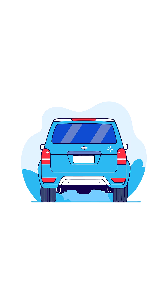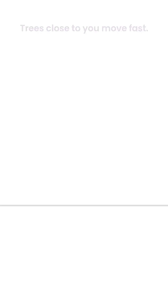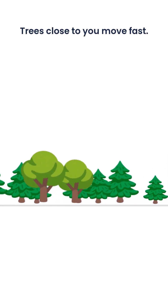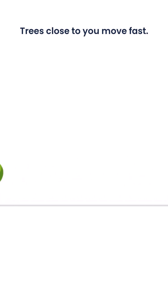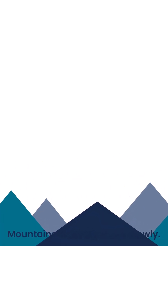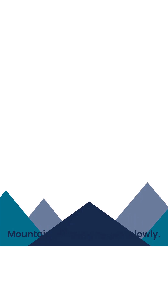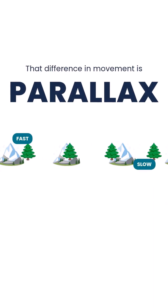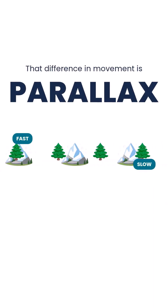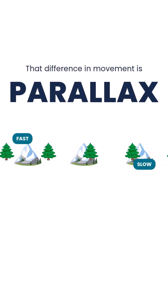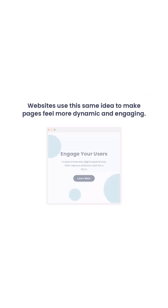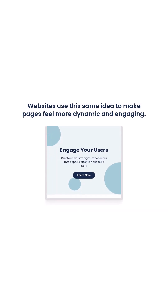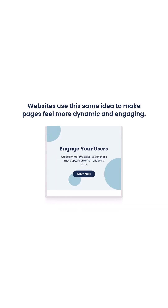To understand, imagine you are looking out of a car window and trees close to you move fast, and mountains far away move slowly. The difference in movement is parallax. Websites use the same idea to make pages feel more dynamic and engaging.